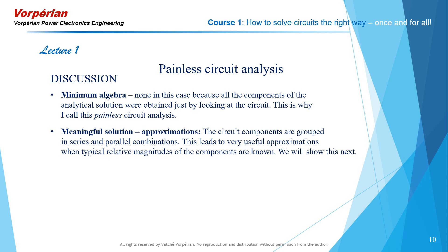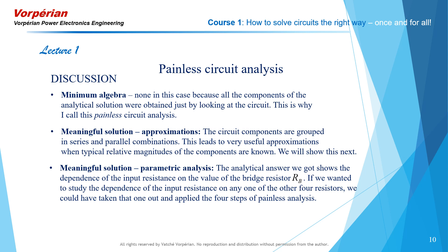If I want to perform approximations, I can do that so easily and readily on that expression. This meaningful solution is very amenable to parametric analysis. The analytical answer we just obtained shows the dependence of the input resistance on the value of the bridge resistor RB. If we wanted to study the dependence on any one of the other four resistors, we could have taken that resistor out and applied those four steps to obtain a similar answer.